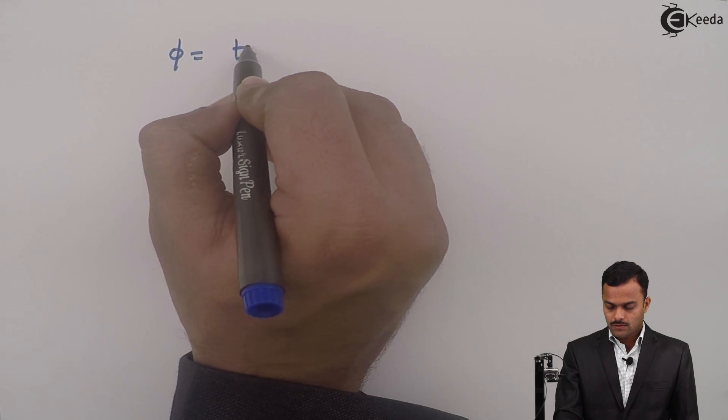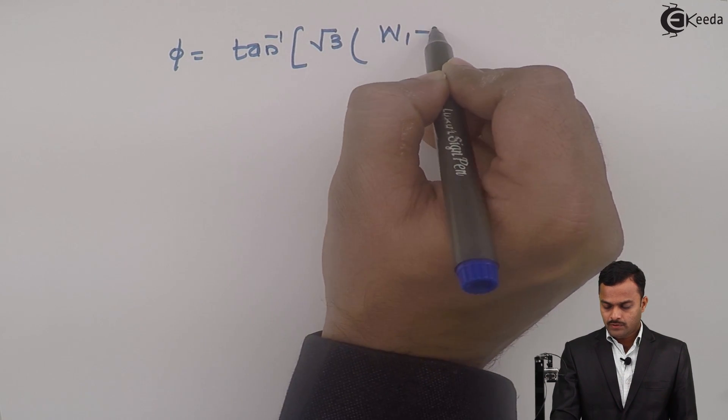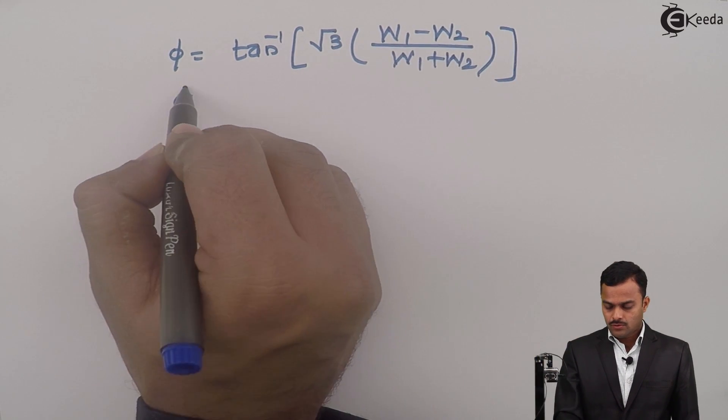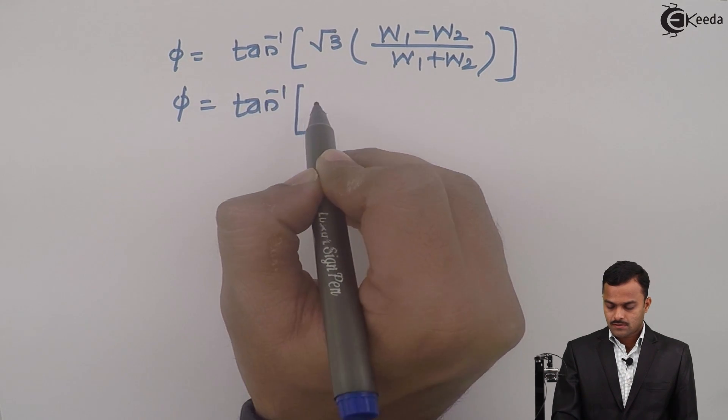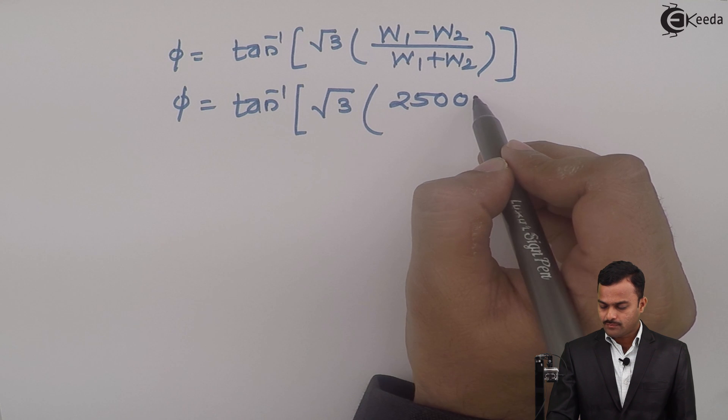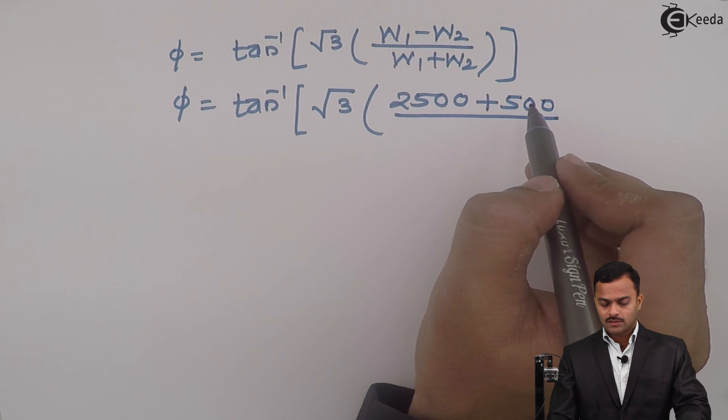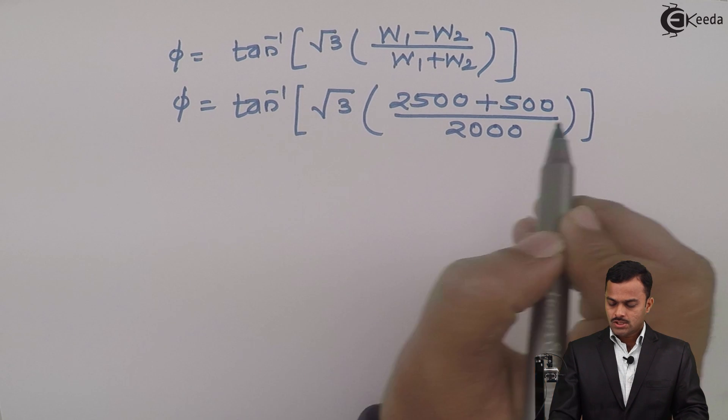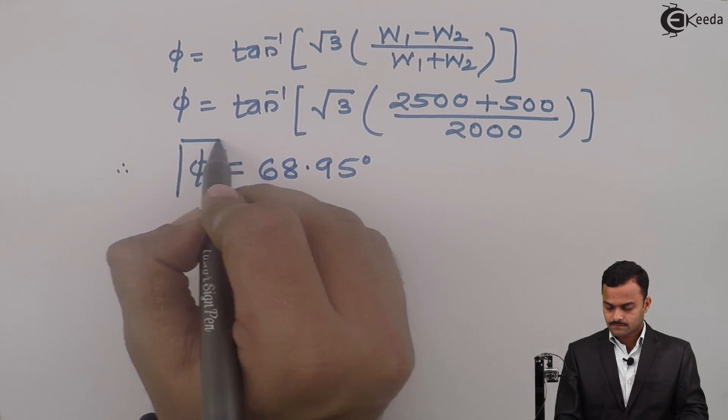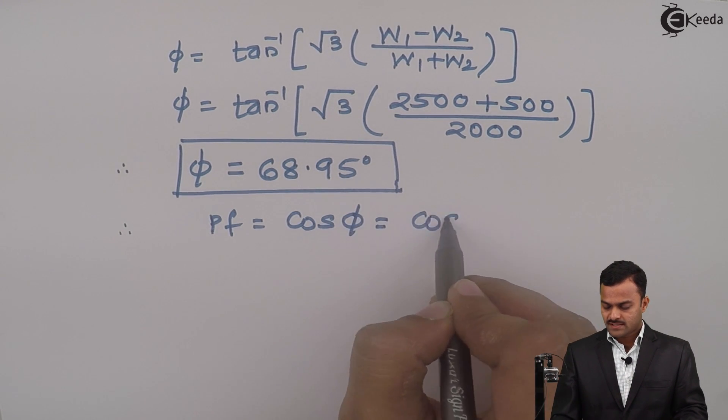And how to get the phase angle φ? The same formula: φ equal to tan inverse root 3 times (W1 minus W2) upon (W1 plus W2). So let's substitute. That will give me tan inverse root 3 times (2500 minus minus 500), therefore minus minus becomes plus, so plus 500, upon 2000. So after solving this, φ equal to 68.95 degrees, and power factor will be cosine of 68.95.